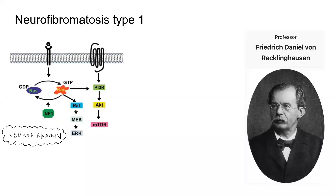Hello friends. In this video, we are discussing the neurocutaneous syndromes — specifically neurofibromatosis type 1 and type 2. Neurofibromatosis type 1 is autosomal dominant; most of the neurocutaneous syndromes are autosomal dominant. The incidence is 1 in 3,000.